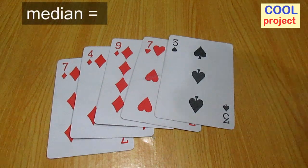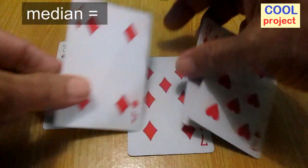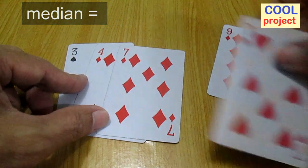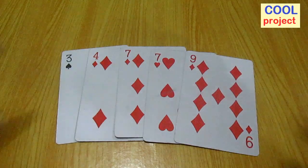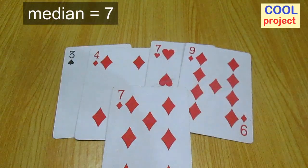To find the median, arrange it first: 3, 4, 7, 7, 9. The median is 7.